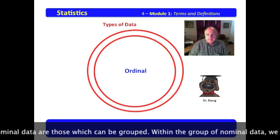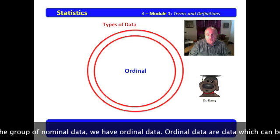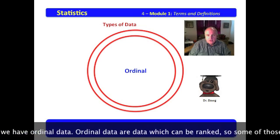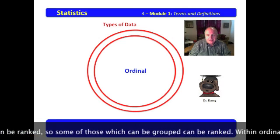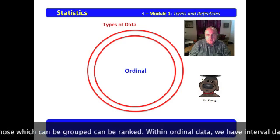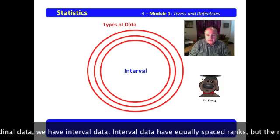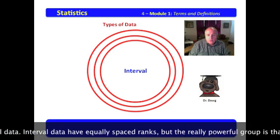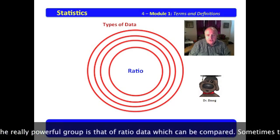Within the group of nominal data, we have ordinal data. Ordinal data are data which can be ranked. So some of those which can be grouped can be ranked. Within ordinal data, we have interval data. Interval data have equally spaced ranks.